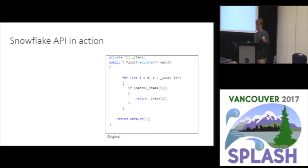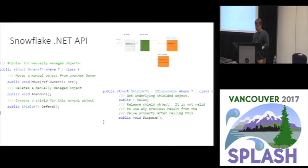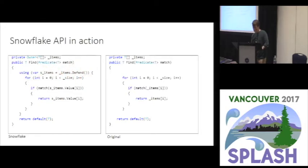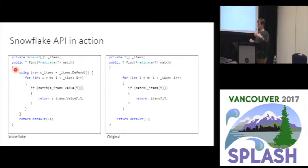If we take some standard code from the list library — a find operation on an items array — and rewrite it: we change the internal data structure to be an Owner<T[]>, so now this is an array in our manual heap. When we want to use it during the find operation, we call defend on the items, which gives us a Shield of items. Throughout this using block — a C# feature for static scoping of resources — we can use s_items. When we actually want to get a value, we do s_items.Value, giving us a way to access that object in a multi-threaded way.